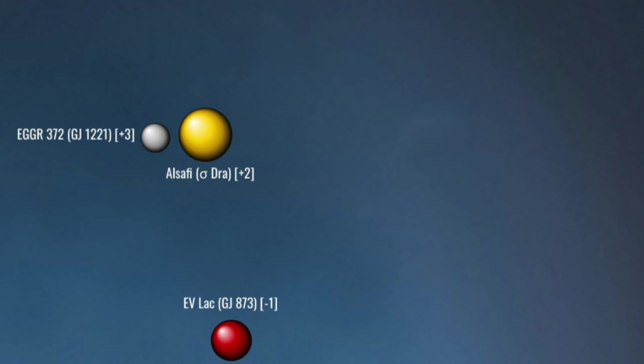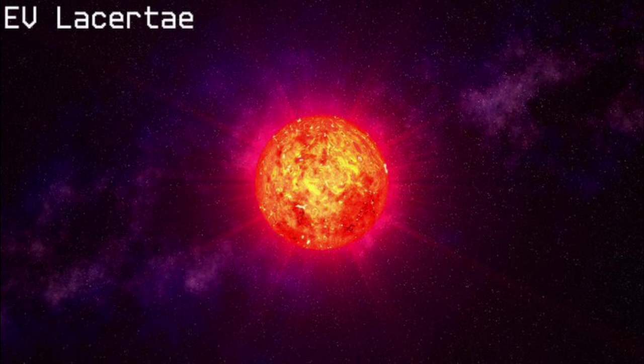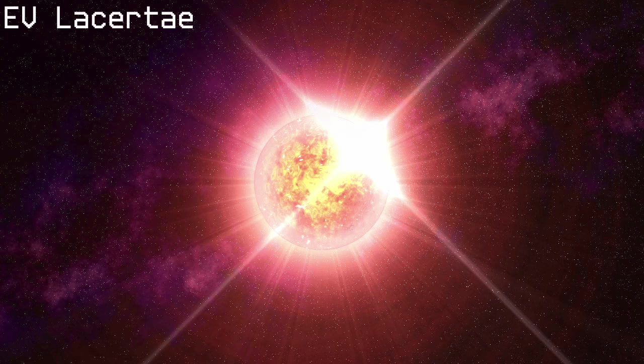East and 3 parsec south, we arrive at EV Lacertae, a red dwarf about a third the mass and radius of the Sun. Its brightness suggests it is young, perhaps 125 million years. EV Lacertae would be just another anonymous red dwarf had not, on the 25th of April 2008, NASA's Swift satellite caught a flare on its surface larger than any flare ever detected, thousands of times more powerful than a solar flare, and, had it been in a constellation on our side of the Sun at the time, visible to the naked eye.